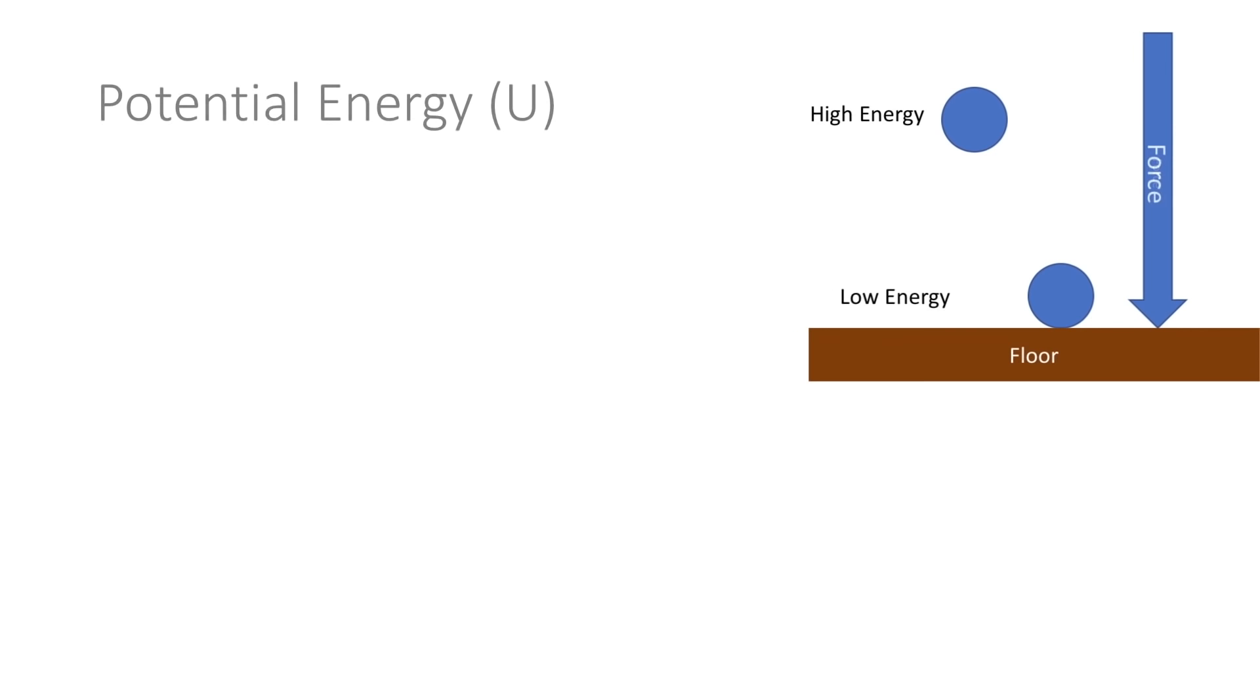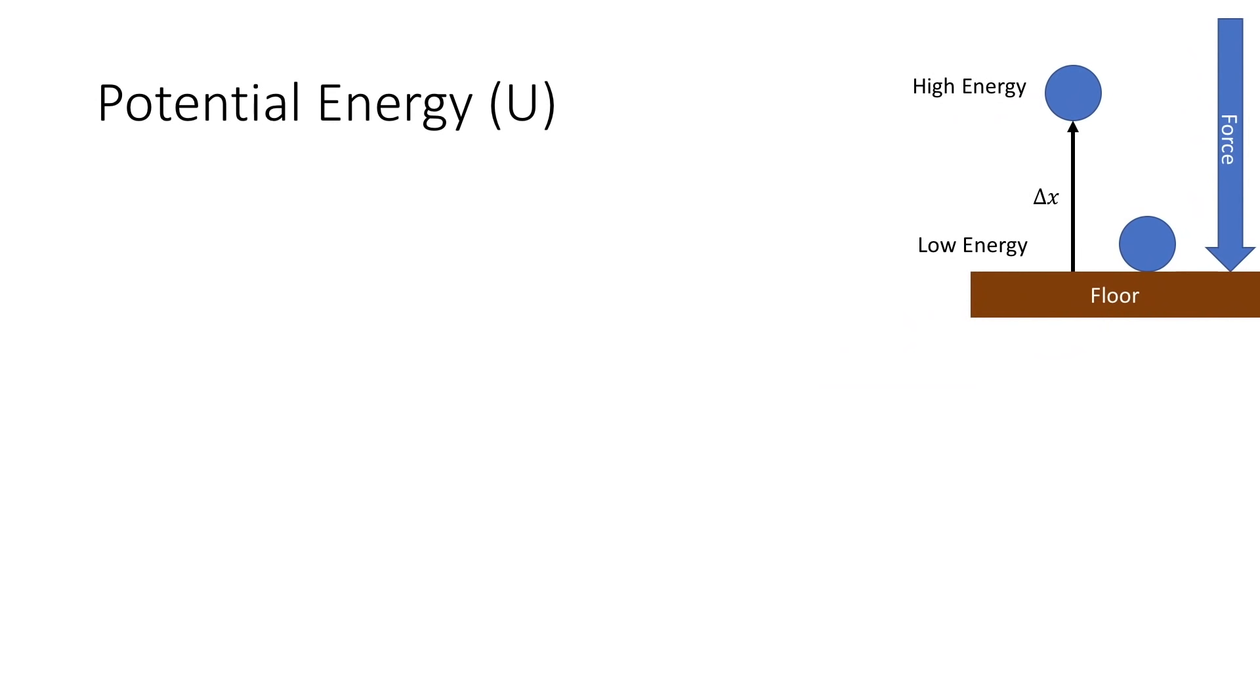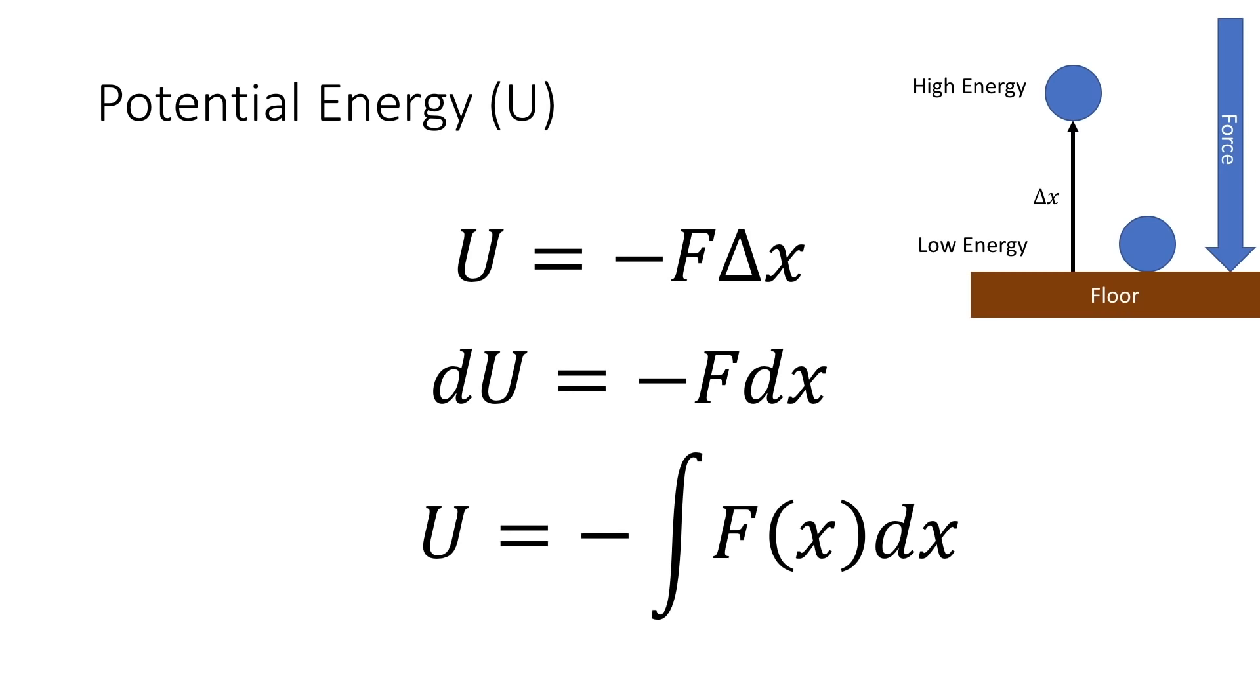When moving an object from one position to another against a force, the change in the potential energy is described by the negative of the product of the force you are working against and the distance moved, or more properly, the negative of the integral of force with respect to position.